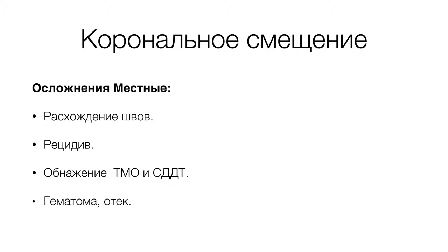Осложнения могут быть местные или общие. К местным осложнениям данной методики относятся самые классические расхождения швов, первичный рецидив — появление рецессии в том или ином количестве, обнажение трансплантата или его гибель, гематома и отёк. По поводу расхождения швов — предупредить данное осложнение достаточно просто.